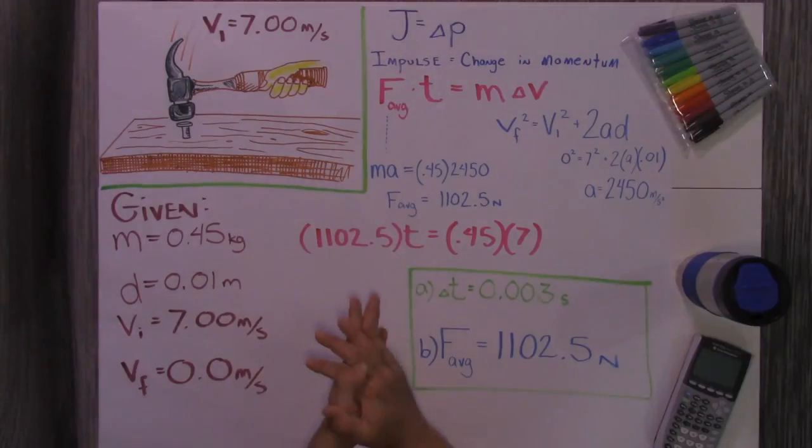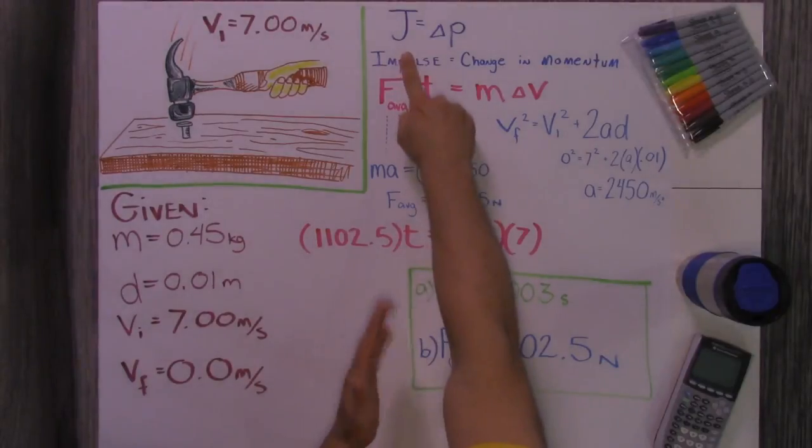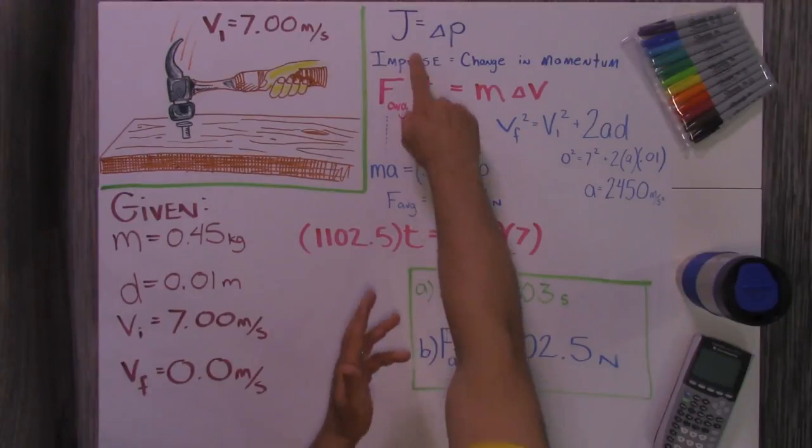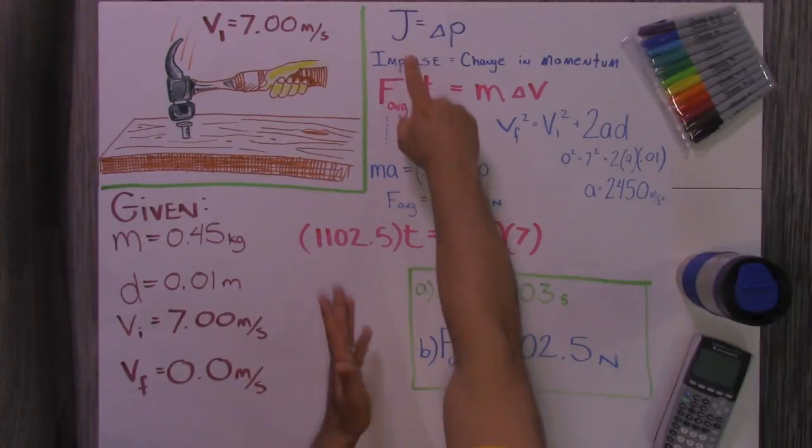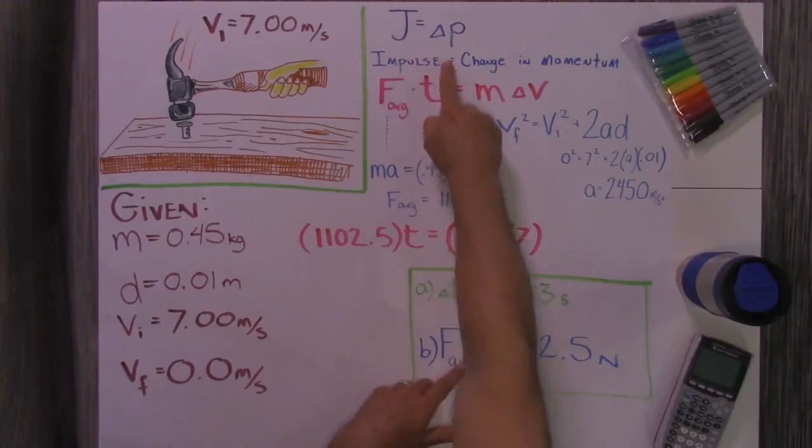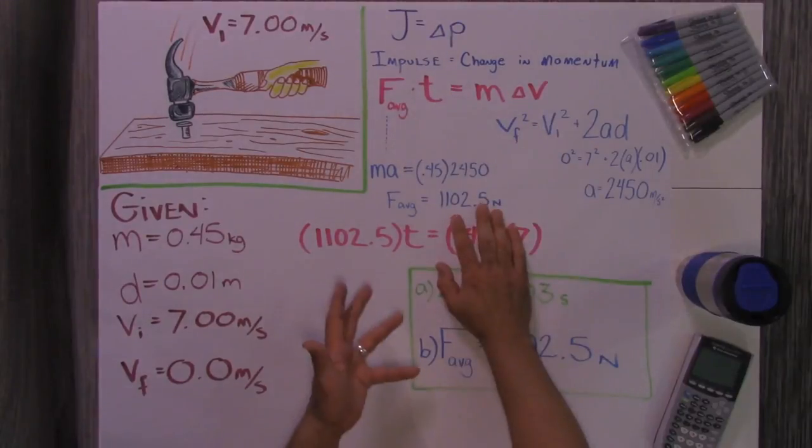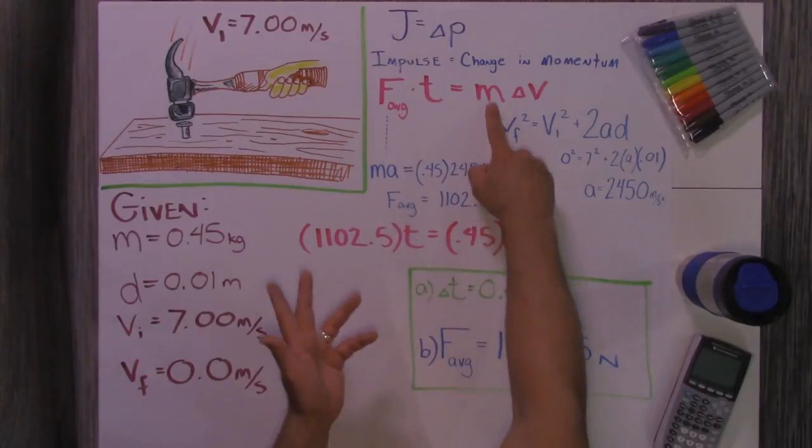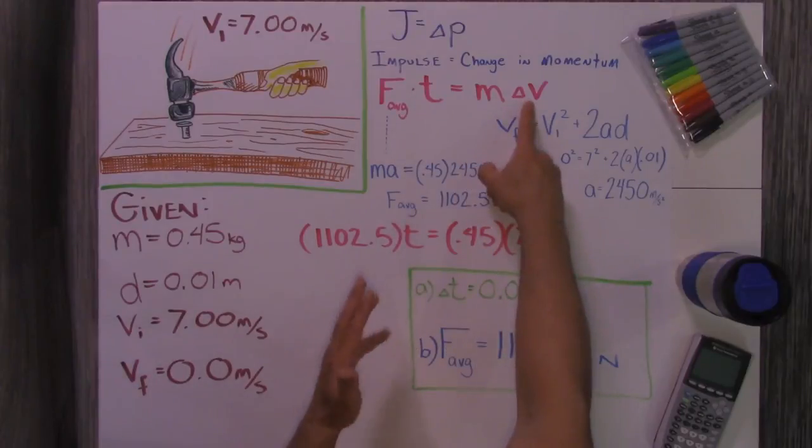First, I used this thing called the Impulse Momentum Theorem. Some people use a J for impulse, some people use an I. I don't like to use an I. That's moment of inertia and current, so I use a J. So J is what I use for impulse, and that's equal to a change in momentum. What that means is impulse is the average force times time. Change in momentum is going to be our mass of the hammer times its change in velocity.